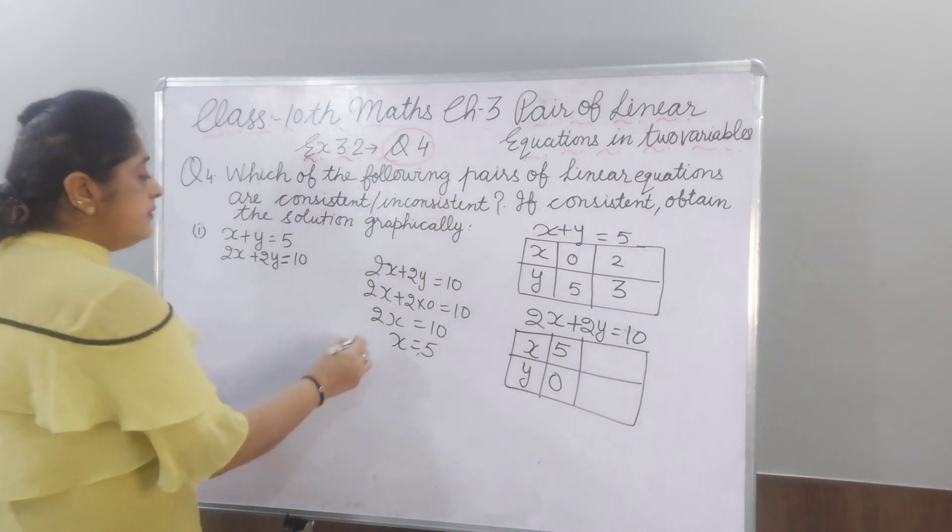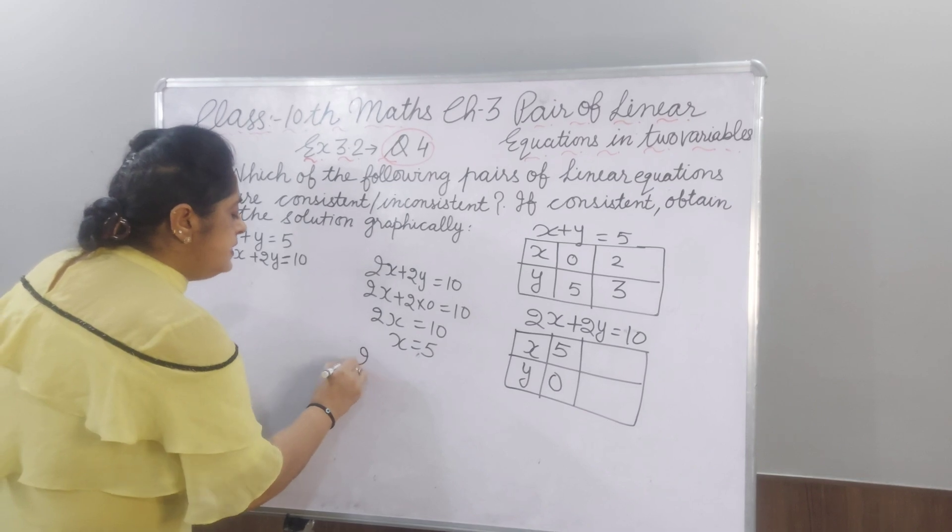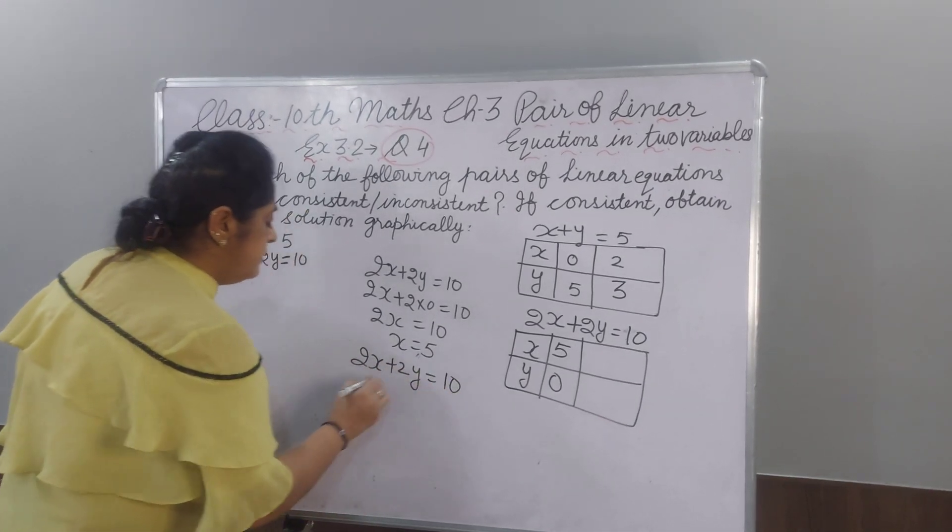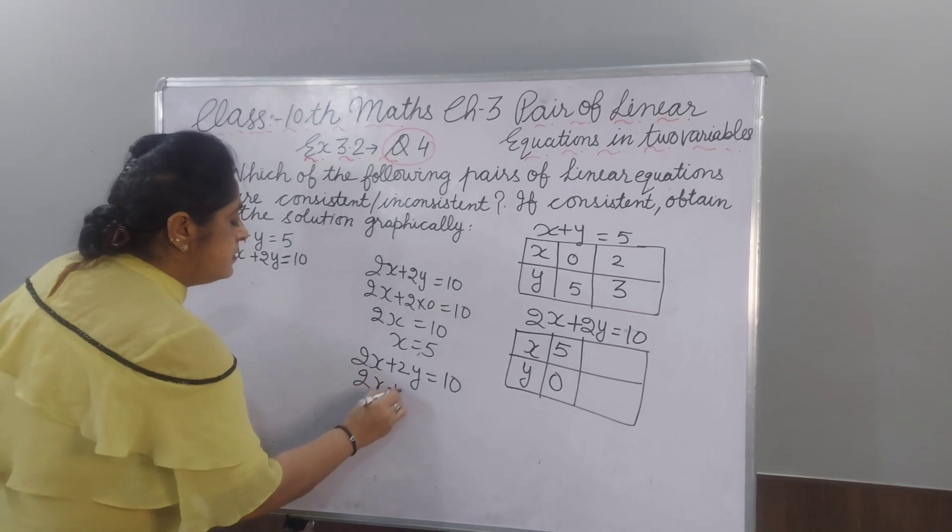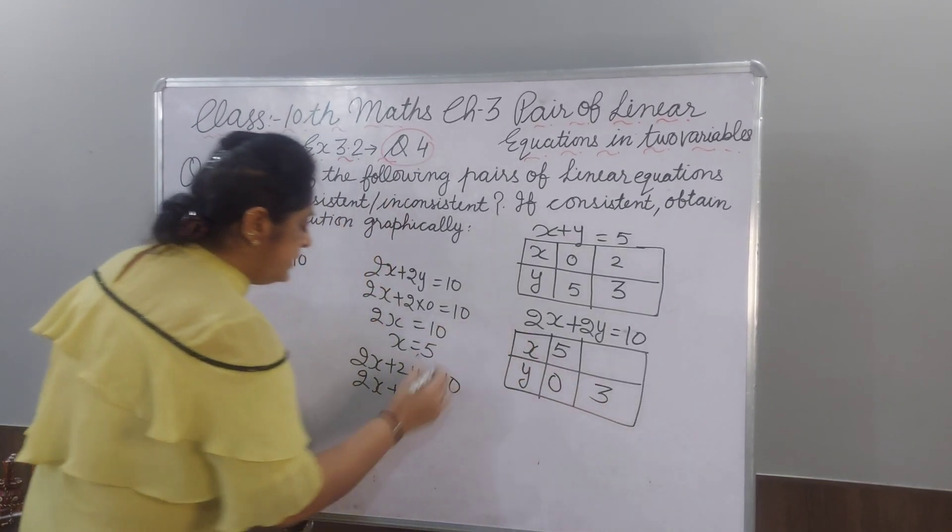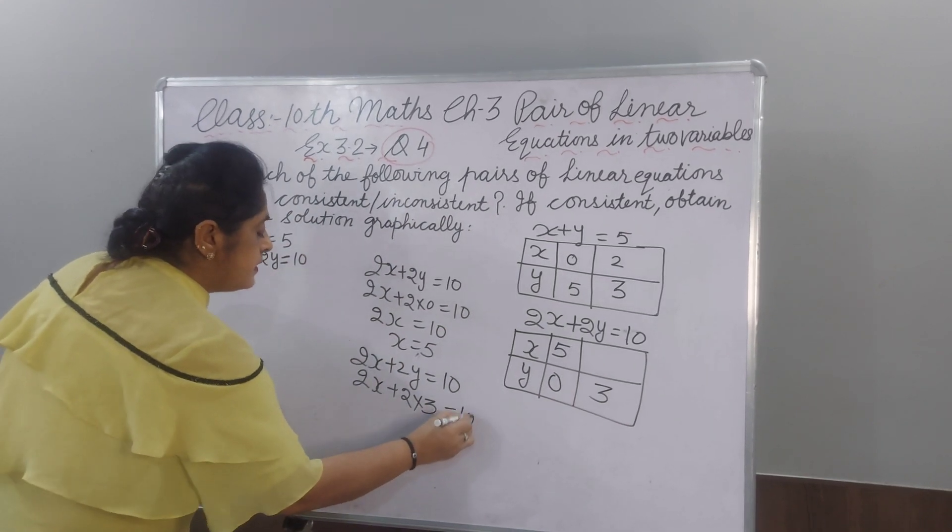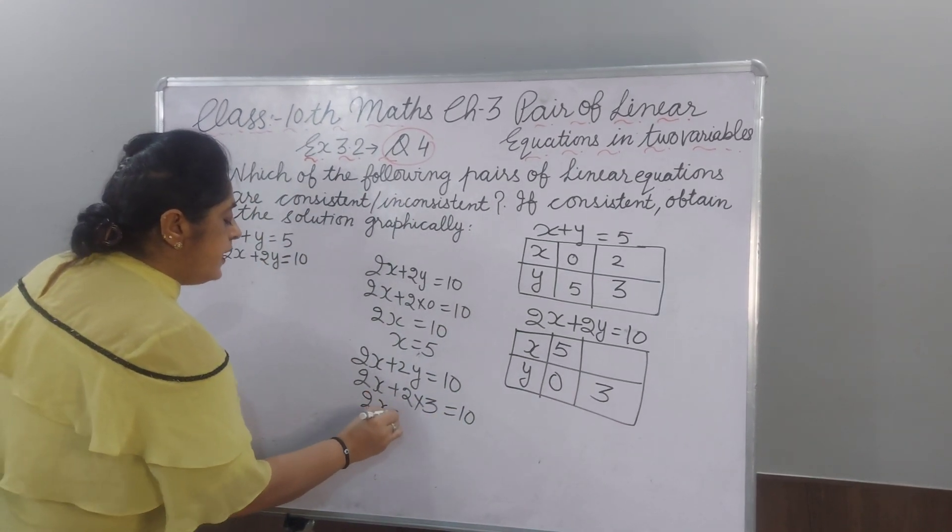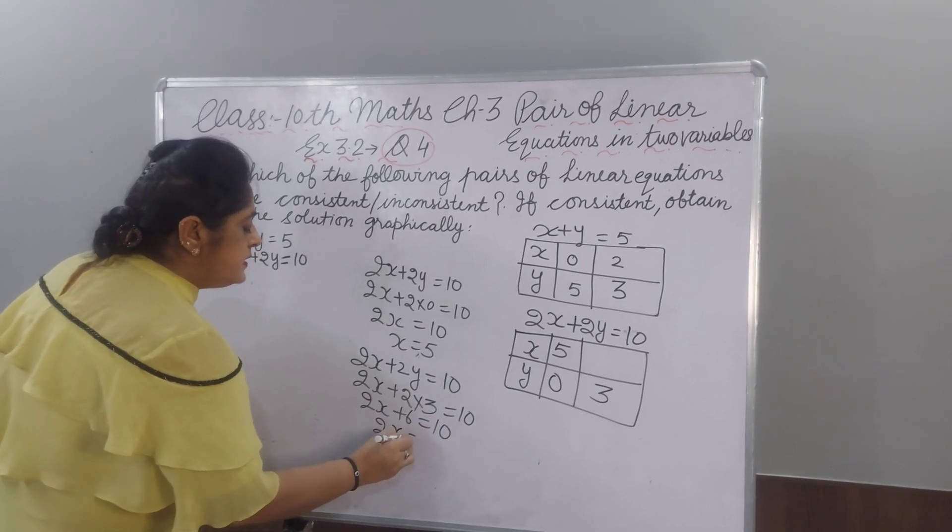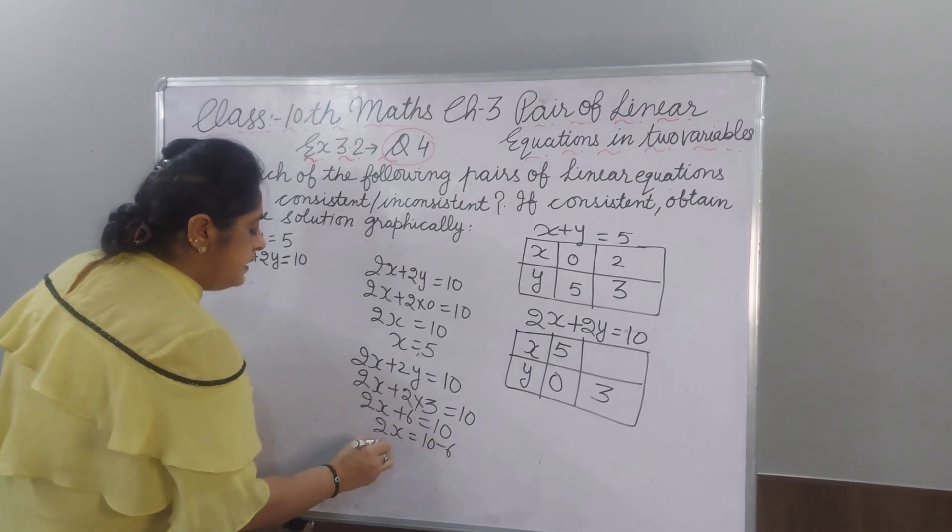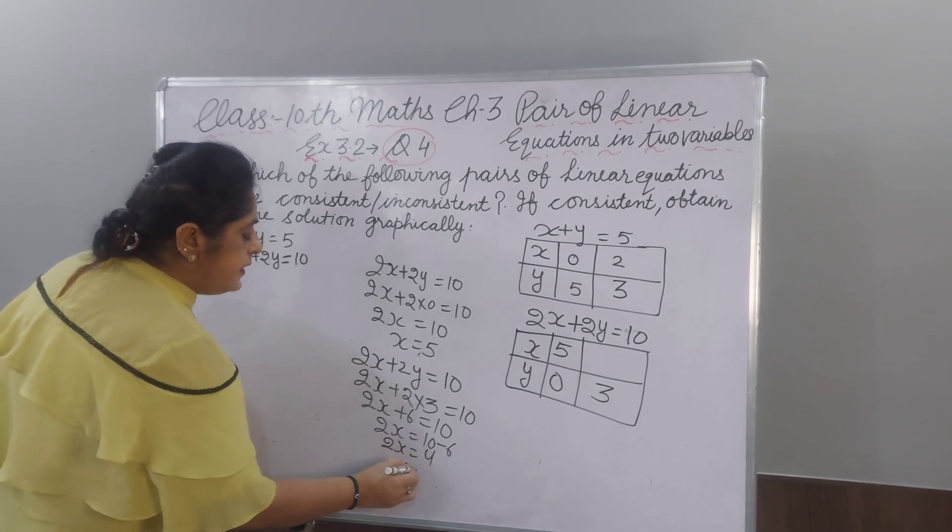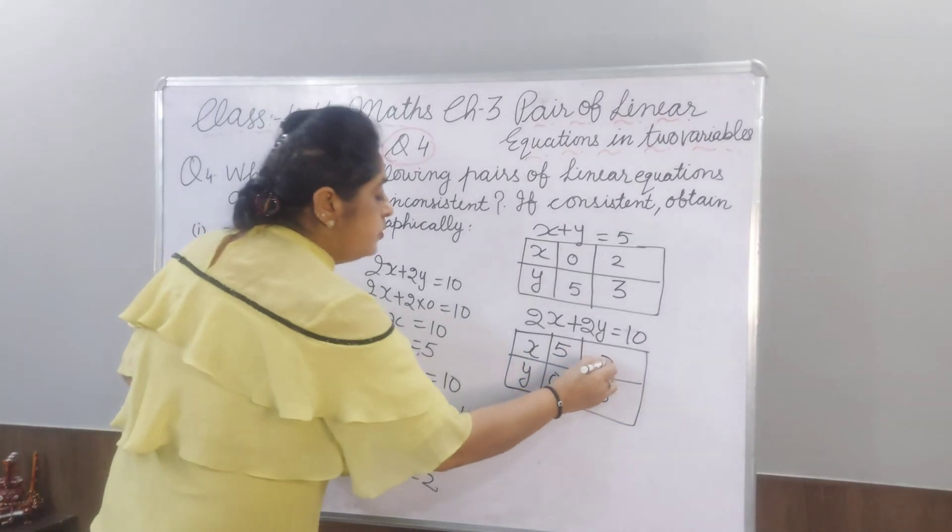Now, take Y as 3 or 4. Any number you can take. Now, I am taking Y as 3. 2X plus 6 equal to 10. And 2X equal to 10 minus 6. 2X equal to 4. And X value 4 divided by 2, you will get X as 2.